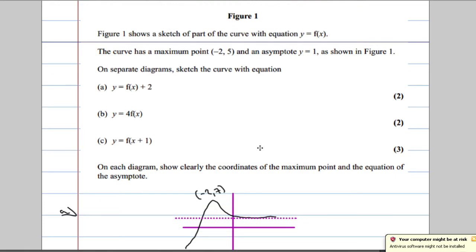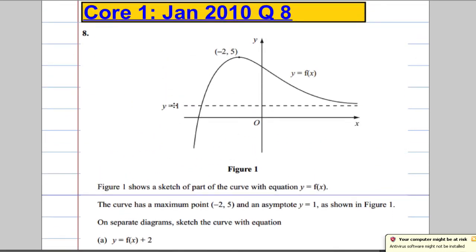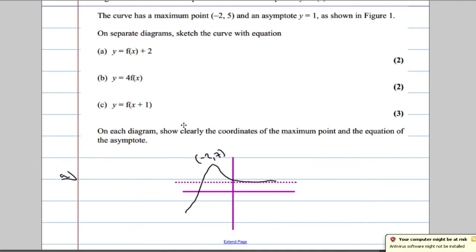Now, the asymptote which was y equals 1 would have also shifted as well. The asymptote should now be y equals 3. So the asymptote is y equals 3.